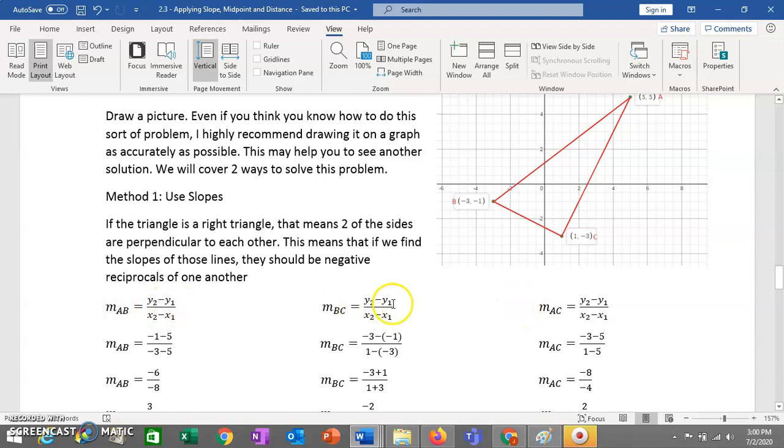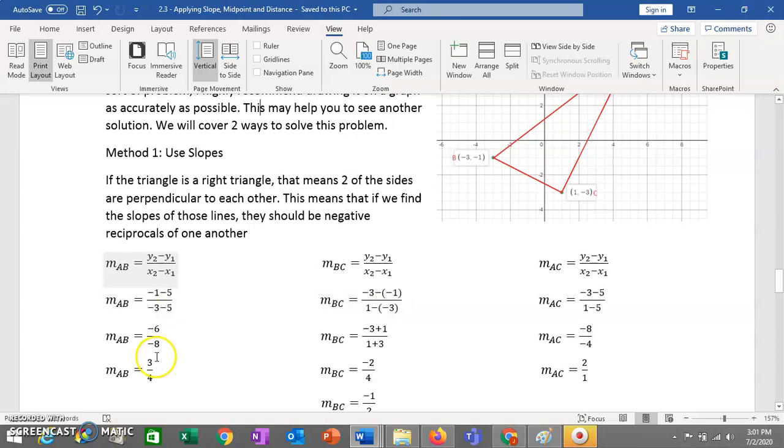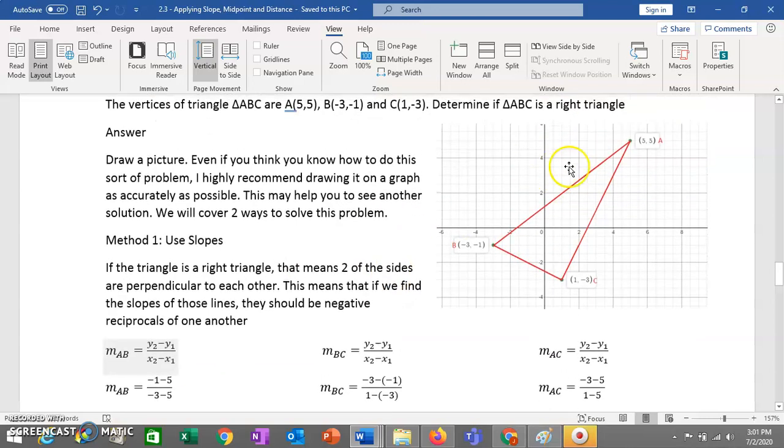We know that the slopes of perpendicular lines are negative reciprocals of each other. And what does it mean to say that two lines are perpendicular? Well, it means they intersect at 90 degrees. So if this is a right angle, then this line and this line are perpendicular. Their slopes should be negative reciprocals. So what I'm going to do is use the slope formula to find the slope of all three line segments. Line segment AB, line segment BC, line segment AC.